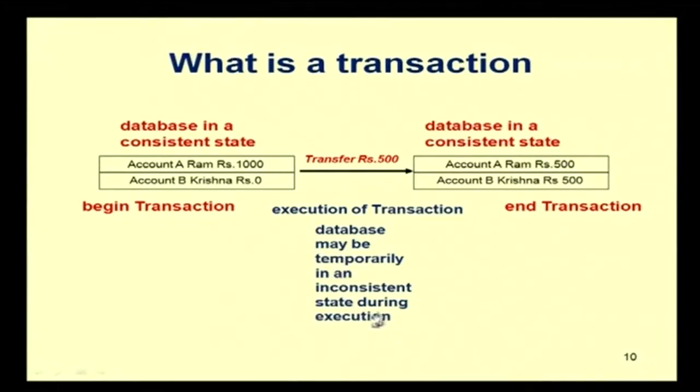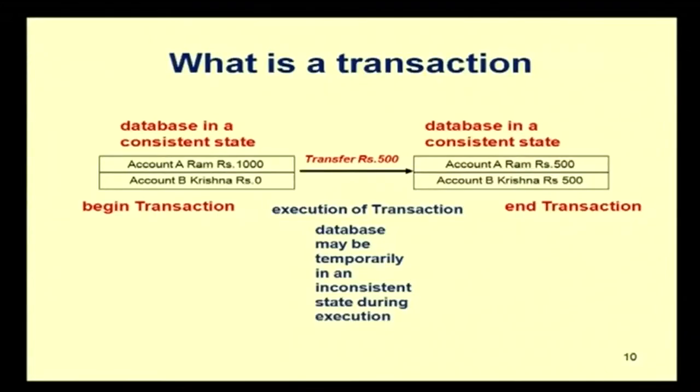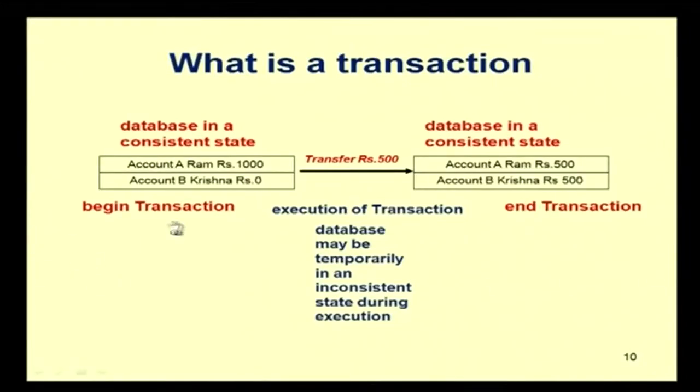The database may be temporarily in an inconsistent state during execution. For example, when you reduce Ram's account from 1000 to 500 but have not yet changed Krishna's account from 0 to 500, the database is inconsistent because 500 rupees appears lost. If a problem prevents completing the transaction, you go back to the original state. Always, a transaction takes a database from one consistent state to another consistent state.